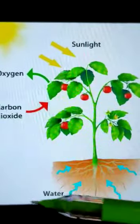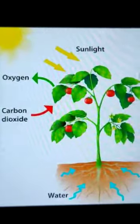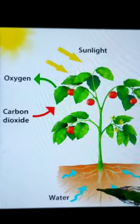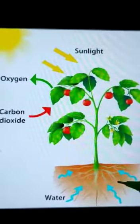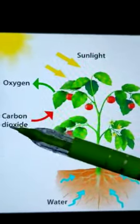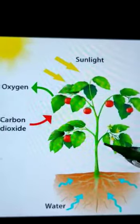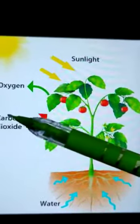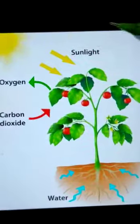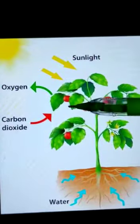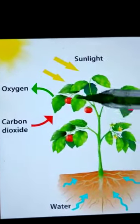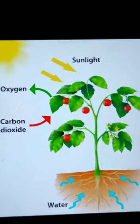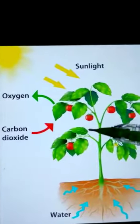Now let's understand how the whole process of photosynthesis works. Plants absorb water and minerals from the soil with the help of roots. Leaves absorb carbon dioxide from the air with the help of stomata. Plants get energy from the sun, and green leaves contain chlorophyll which traps this energy for preparing food. Green leaves make food in the form of glucose, and oxygen gas is given out. Glucose is then converted into starch by the plant.